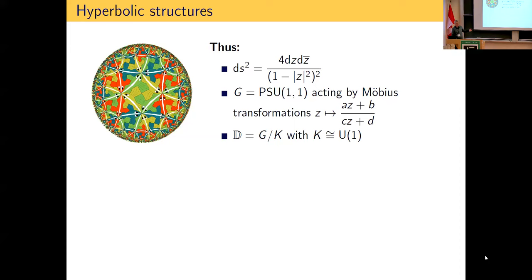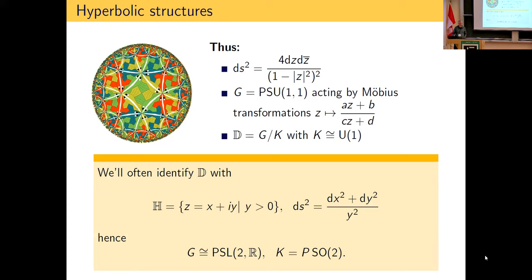We often prefer the upper half-plane model of hyperbolic geometry because the metric looks simpler: (dx² + dy²)/y². In this perspective the group G is PSL(2,ℝ) and the stabilizer group is PSO(2) — that is SO(2) mod ±1, which is also SO(2). That's our model space for hyperbolic geometry.